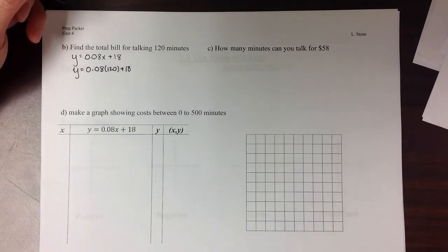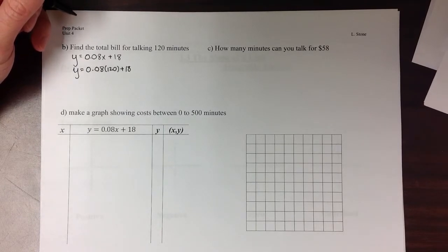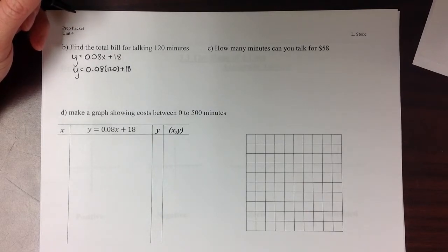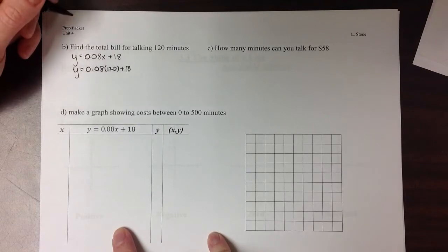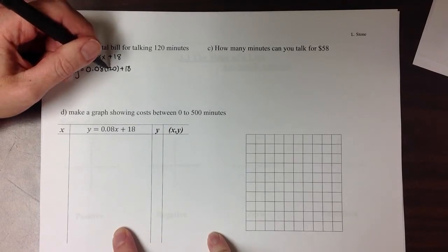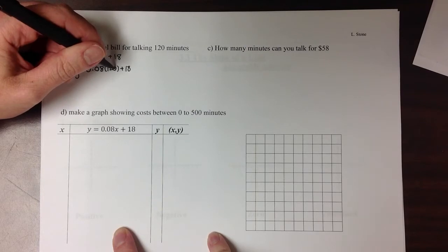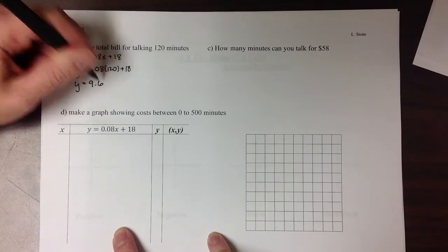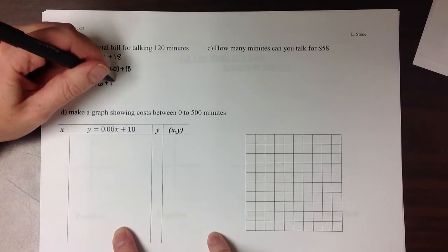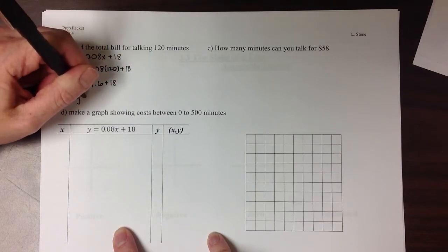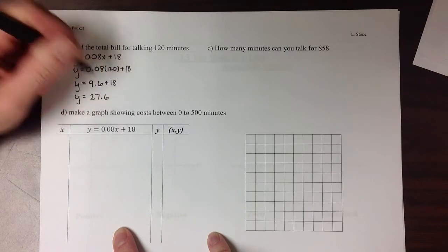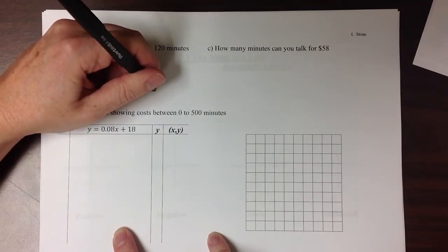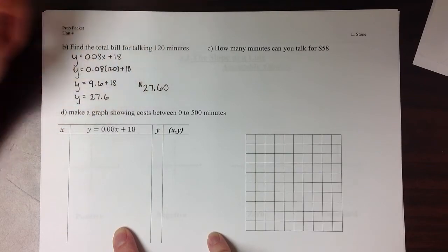So we're going to write this again as y equals 0.08 times 120 plus 18. Then we need to figure out what that multiplication is. Well, 8 times 12 would be 96, and this with the extra 0 is going to be 960. Moved in two places gives me y equals 9.6. So adding 18 to that, it looks like I'm going to get 27.6, or $27.60.